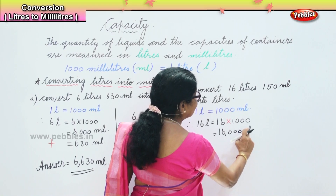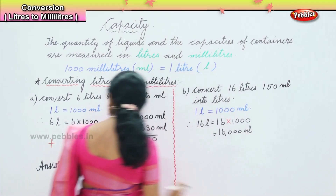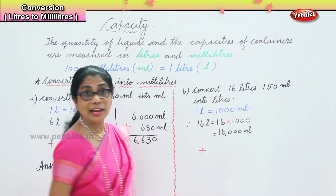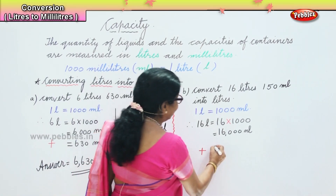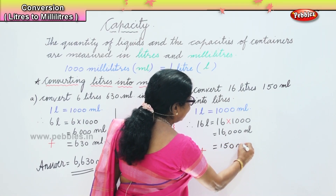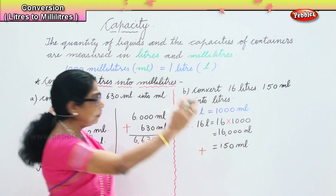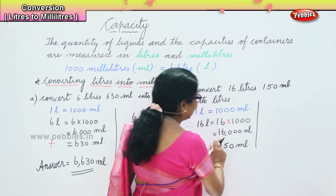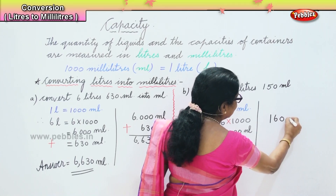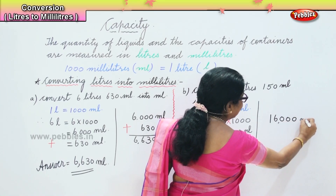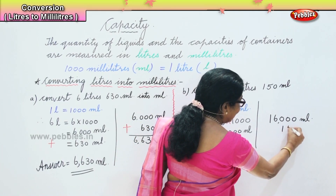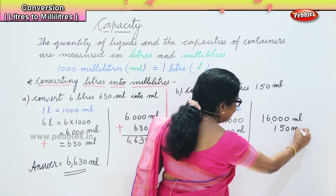Now we need to add some more. We have to add one hundred and fifty milliliters also. Now let's draw the column and do it there. Sixteen thousand milliliters — we have here plus we are going to add one hundred and fifty milliliters.